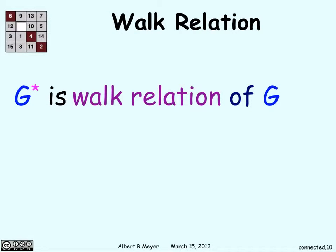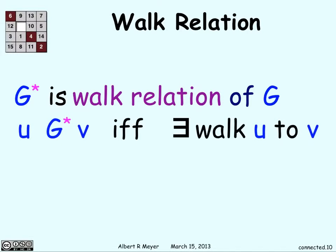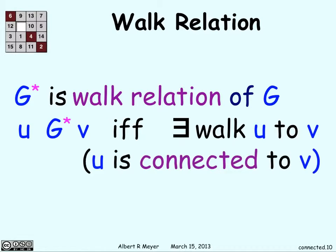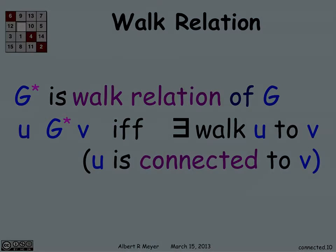Now let's define another relation. G* is just called the walk relation of G. And basically, G* applies from u to v if there is a walk from u to v, no matter how long it is. If you can find some way to get from u to v, then it applies.